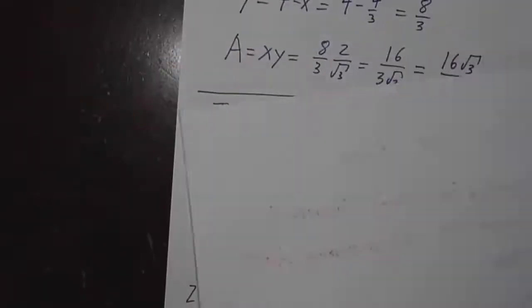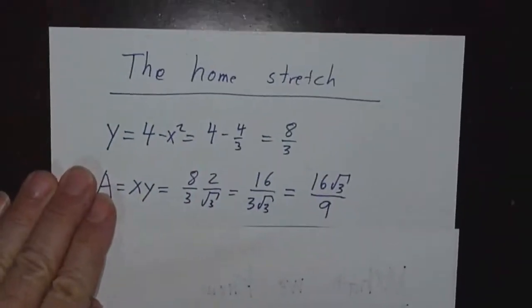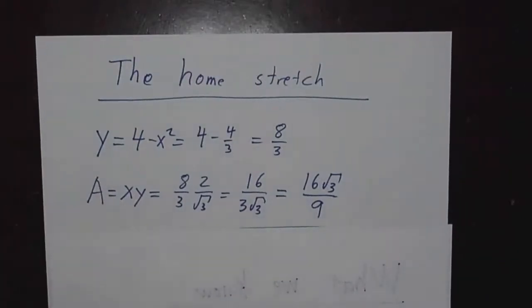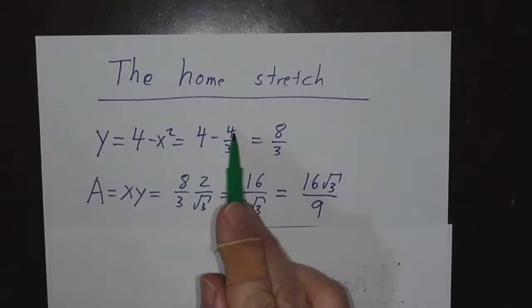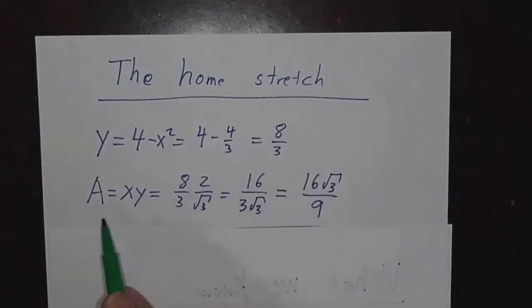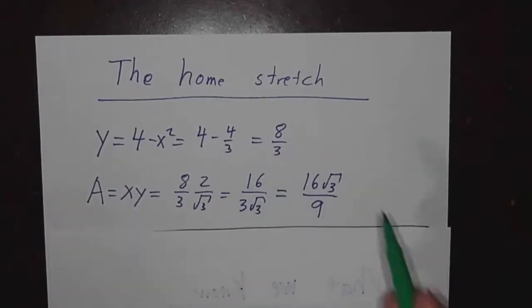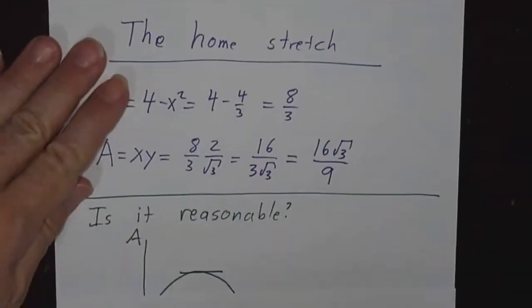Now we're almost done. If x is 2 over root 3, then y is 4 minus x squared, which is 4 minus 4 thirds, which is 8 thirds. And our area is x times y. So that's 8 thirds times 2 over root 3, which is 16 over 3 root 3. Or if you prefer, you can write that as 16 root 3 over 9.